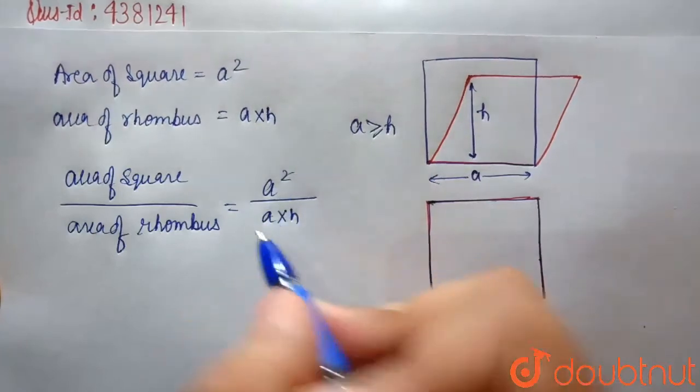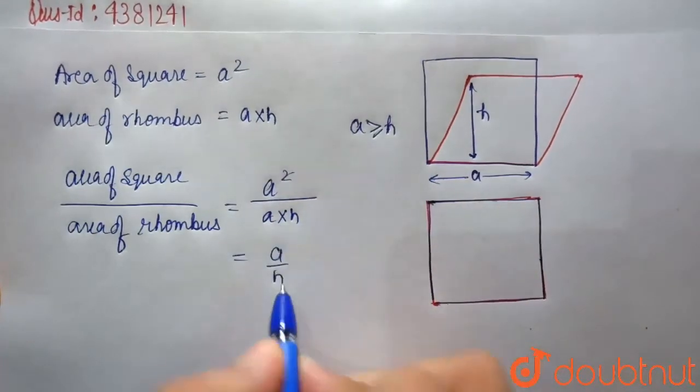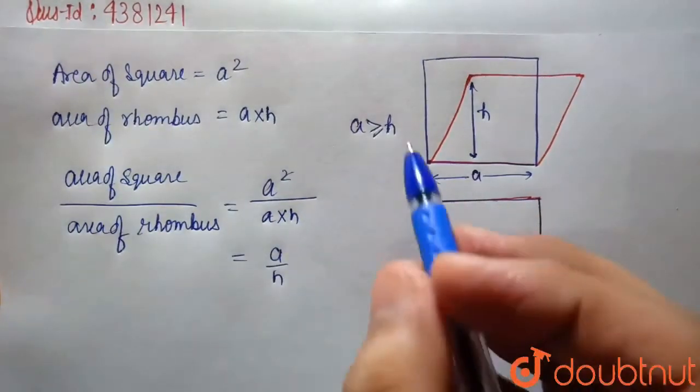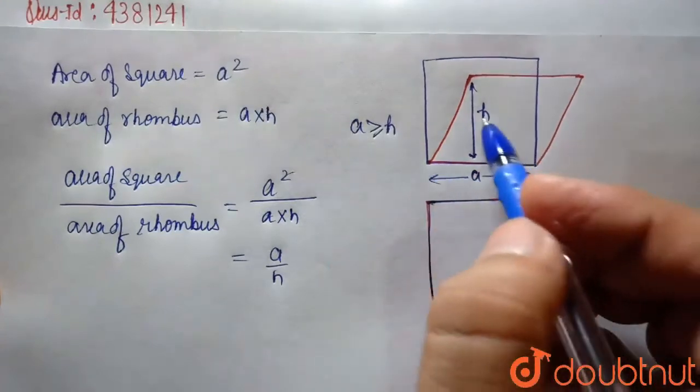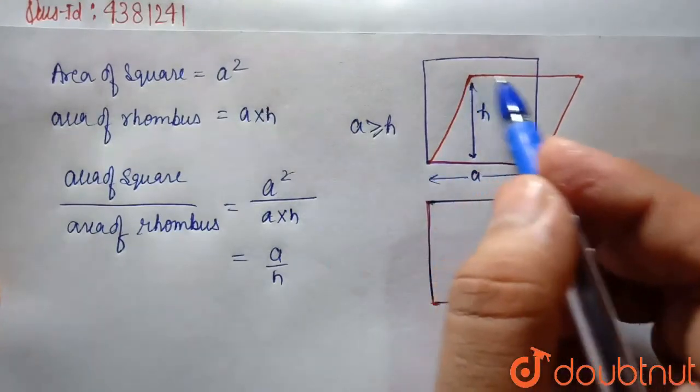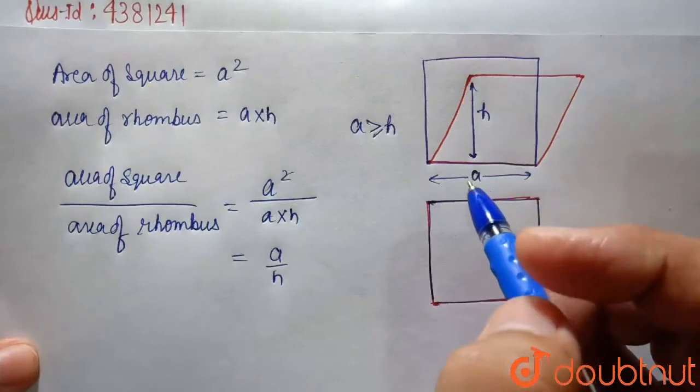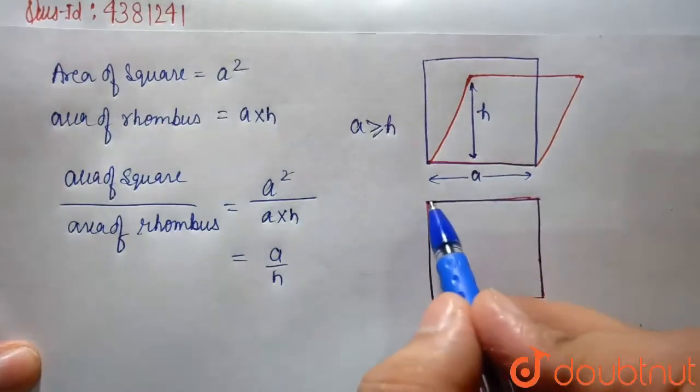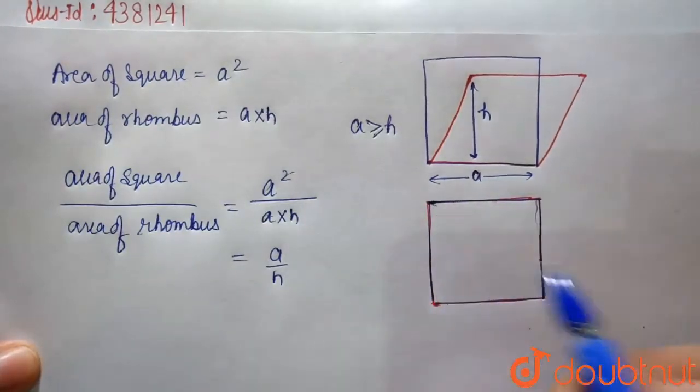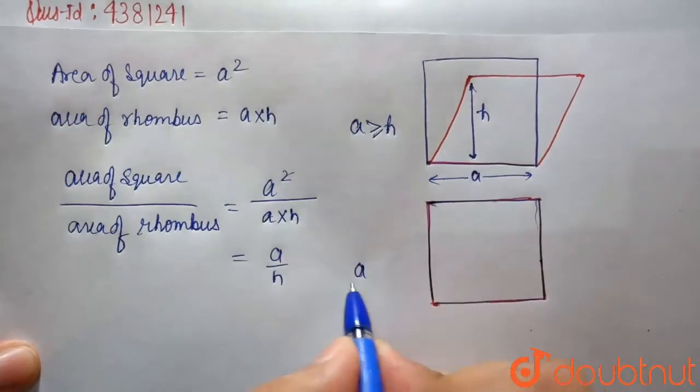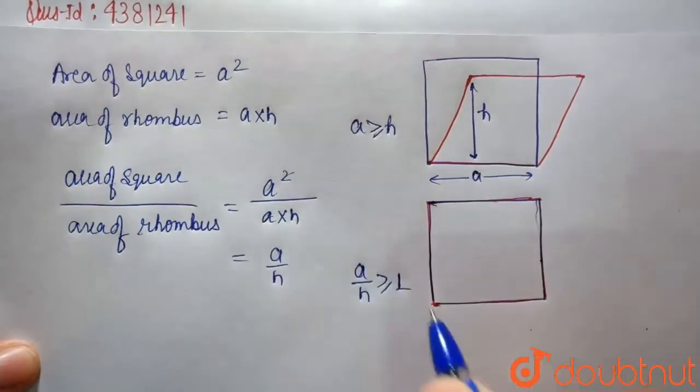So one A cancels. So here, A by H. Now we have to know that H will always be less than A. They're only equal when they coincide. So A by H is always greater than 1.